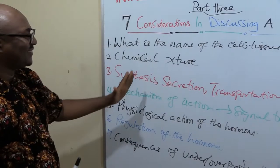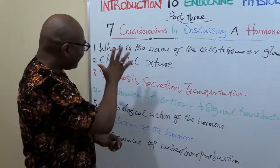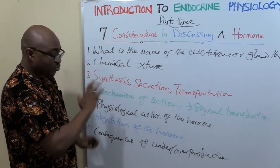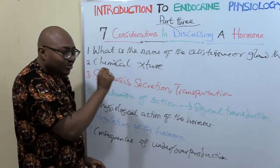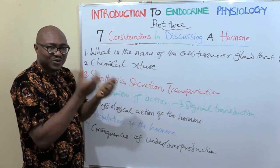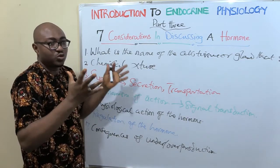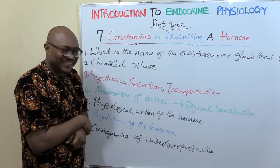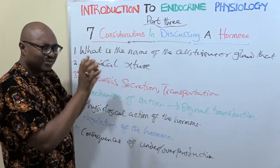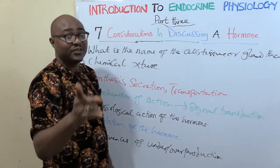These are the seven considerations in discussing a hormone — very simple. Just look at the sequence and follow it step by step, and you won't miss anything. If you mention just two facts about each, you'll have a good volume of knowledge about that hormone. So these are the things you need to know. After this break, we're going to be talking about some things you need to know about regulation of hormones, so don't go anywhere.